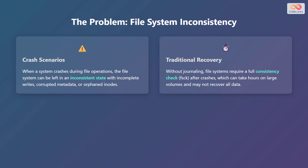Without journaling, file systems would require a full consistency check after crashes. This process, known as file system check or FSCK, can take hours on large volumes. Moreover, it might not recover all the data, leading to potential data loss and system downtime.